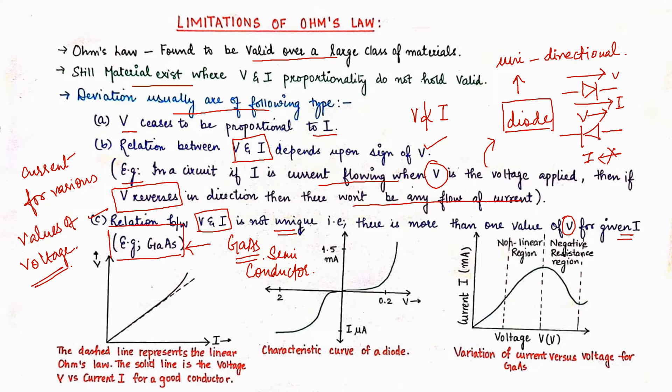Now we will see these graphs. See over here this first graph, the dash line represents the linear ohm slope. The solid line is the voltage V versus current for a good conductor. Initially for some period there is no deviation for conductor, but later on there is a minimum deviation even for the good conductor.